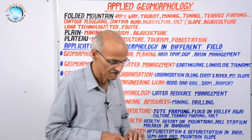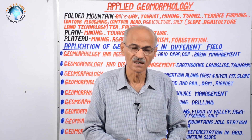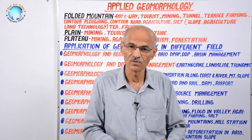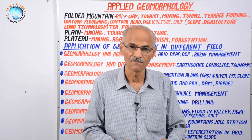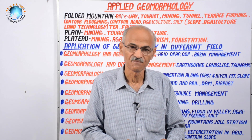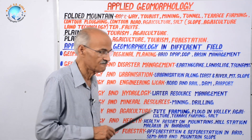Thus, in applied geomorphology there are three aspects. Aspect one: the six geomorphic processes and landforms developed by them are used for the welfare of society and environment. Aspect two: on mountain, plateau, and plain, geomorphologists apply their knowledge for human welfare. Aspect three: all scientific departments involved in betterment of society are taking geomorphological knowledge into consideration.